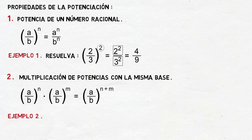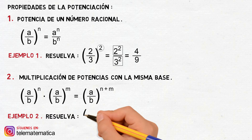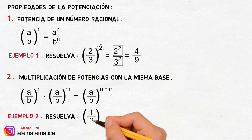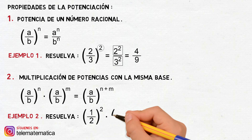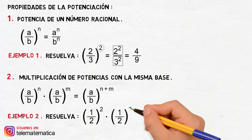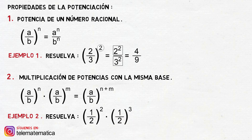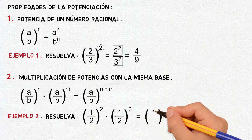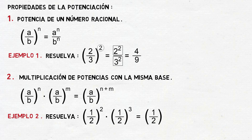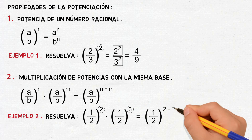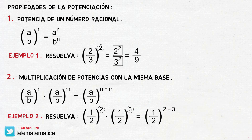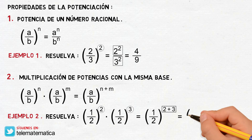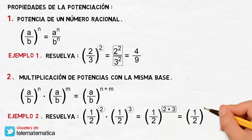Veamos una actividad. Resuelva: 1 medio elevado al cuadrado, multiplicado para 1 medio elevado al cubo. Aplicando esta propiedad, esto va a ser igual a conservar la base A dividido para B y sumar los exponentes. Resolviendo la operación, nos quedaría que esto es igual a 1 medio elevado a la quinta.